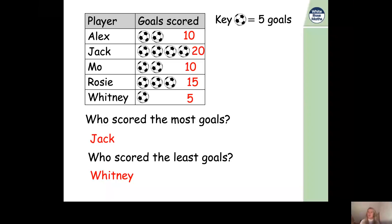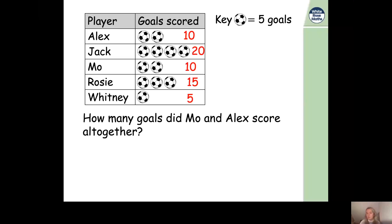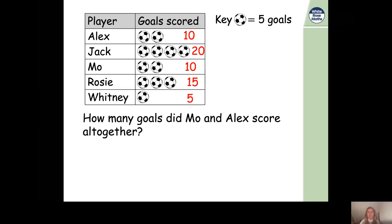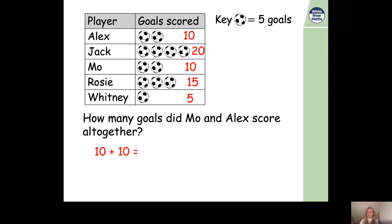We have another question: how many goals did Mo and Alex score altogether? 'All together' means we're finding the total, so we need to do addition. Mo scored 10 goals and Alex scored 10 goals. So we need to do 10 plus 10, which equals 20 — because two steps of ten: one step of ten is 10, two steps of ten is 20.